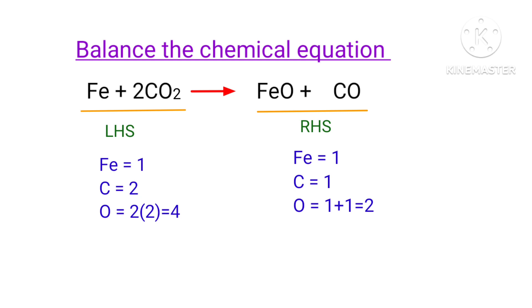A coefficient is a number that we place in front of a chemical formula. In this equation, we need to balance the carbon atoms first. To do this, we need to put a coefficient of two in front of CO.